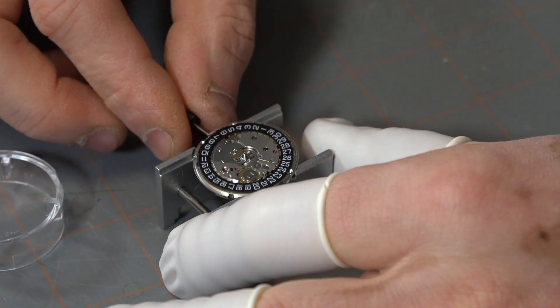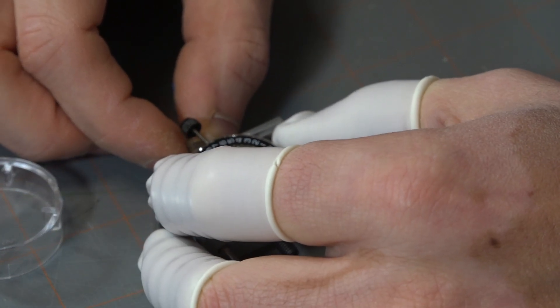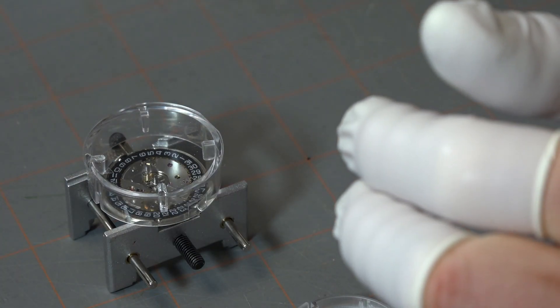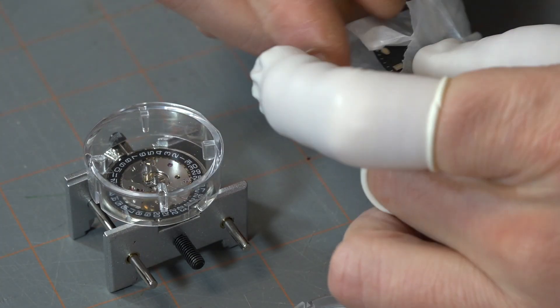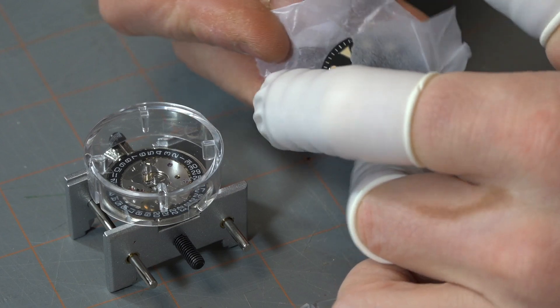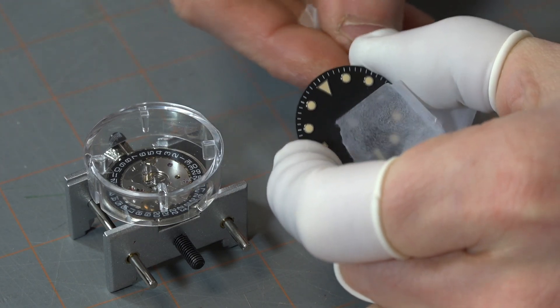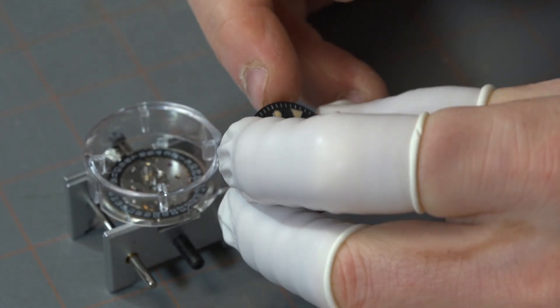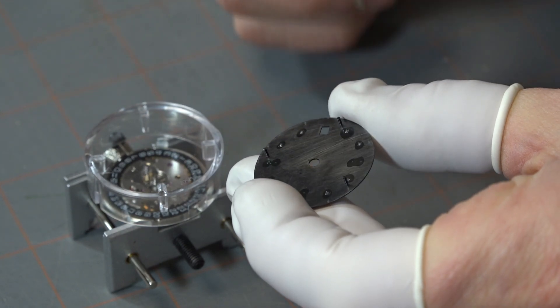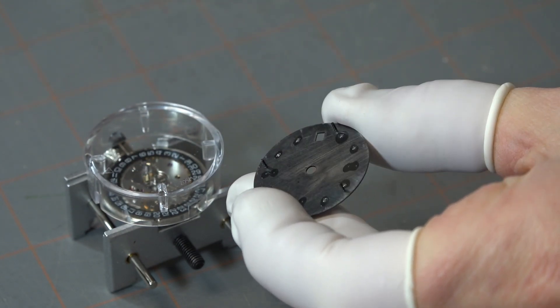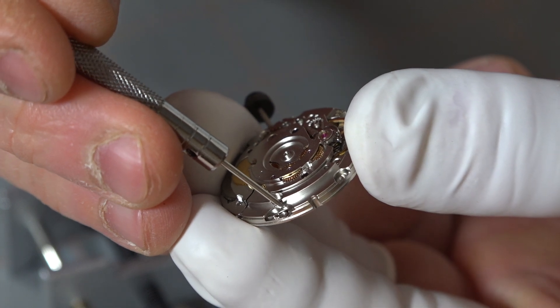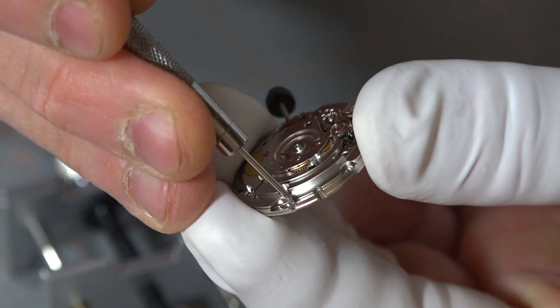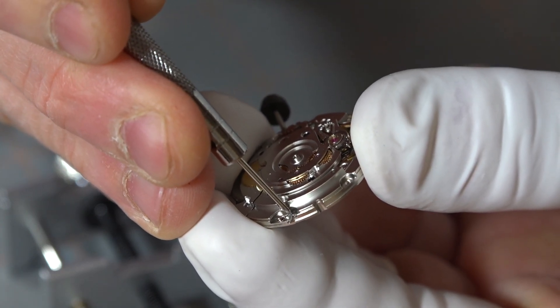The dial itself is attached to the movement with these little things called the dial feet, and each movement has its own unique dial feet position. Some dials will come with multiple dial feet and you have to cut at least one if not two or three of them off depending on the position of your dial feet clips. To open the ETA 2824 dial clips, you actually have to hold the dial or hold the movement quite firmly and push out with a screwdriver.